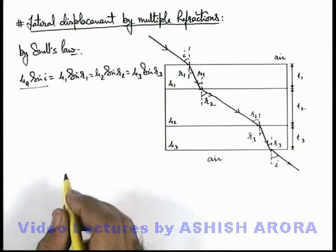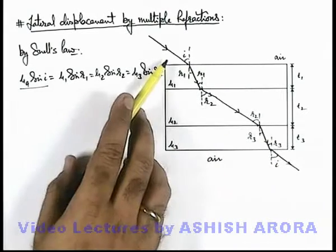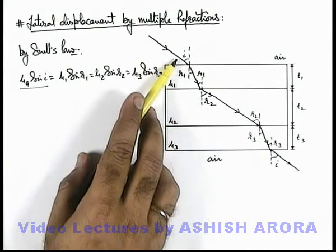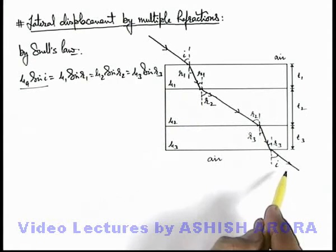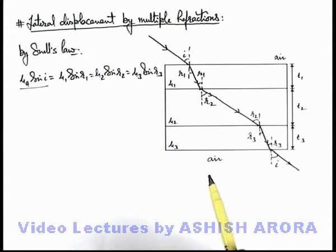That means for all parallel-sided slabs, if a ray is traveling in air and finally coming out in the same medium that is air, the angle of emergence will be same as that of angle of incidence.